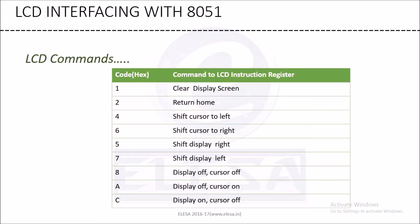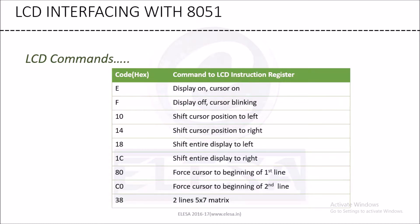Next are LCD commands. As LCD is programmable, some commands are required for setting the LCD display, and these are given through software. When the LCD command in hex equals 1, it will clear the display screen. When hex equals 2, it will return to home. Similarly, 4, 5, 6, 7, 8 give shift cursor left, shift cursor right, shift display right, and shift display left. Hex command E is for display on and cursor on. Hex command F is for display off and cursor blinking. We can force the cursor to the beginning using hex code 0x80, and 0xC0 for the second line.